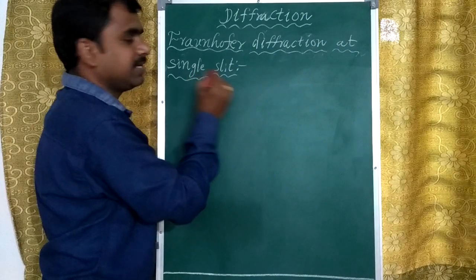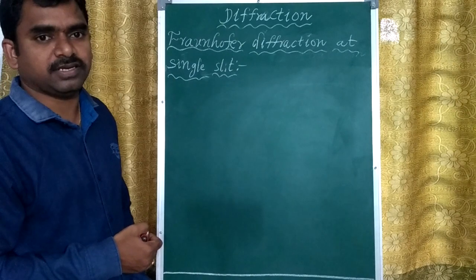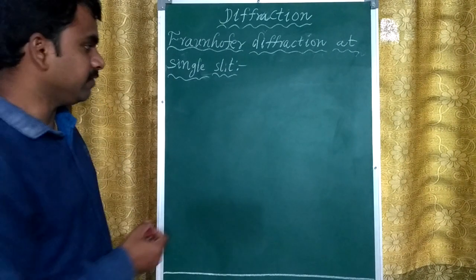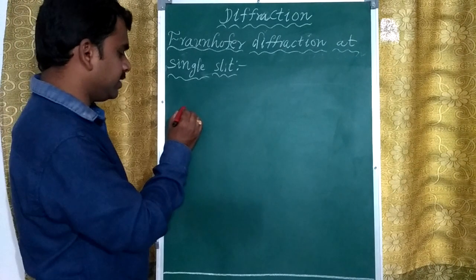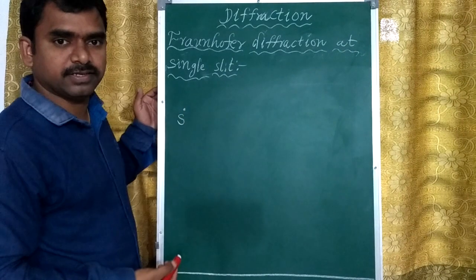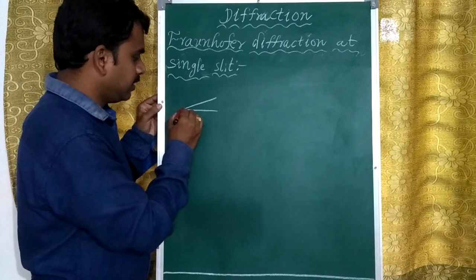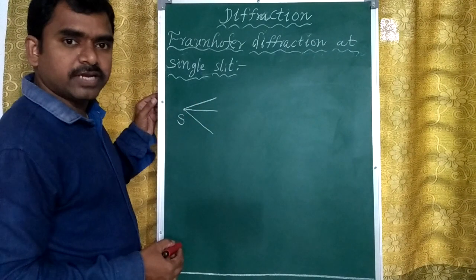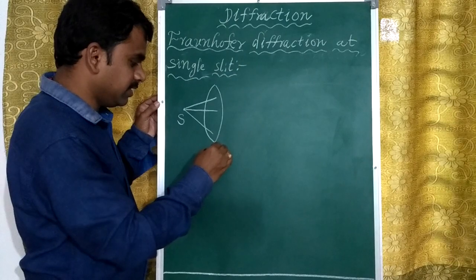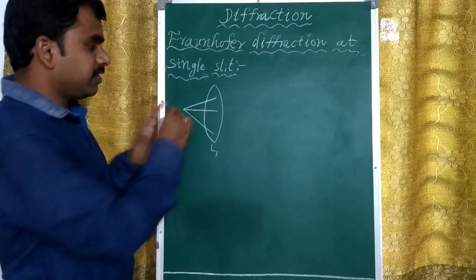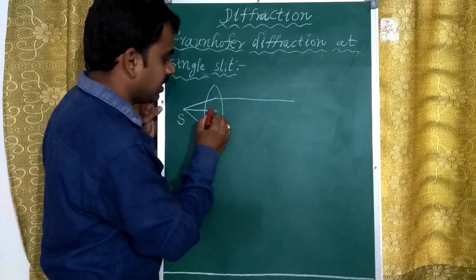Our concept is Fraunhofer diffraction at a single slit, meaning we take one slit. The width of the slit is denoted as small 'a'. We consider a source of light S, which gives light waves in all directions. To get a parallel plane wavefront, we use one lens that converts the beam into a parallel beam traveling over a long distance.